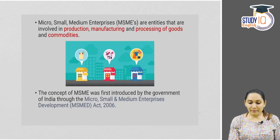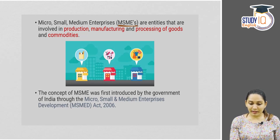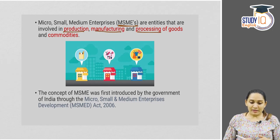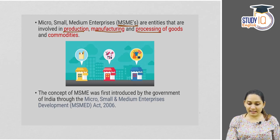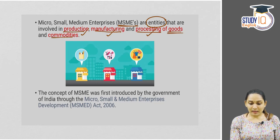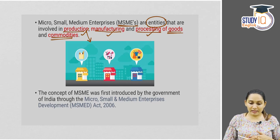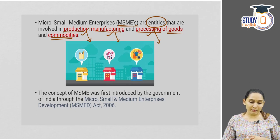MSME — that is micro, small and medium enterprises — are entities that are involved in production, manufacturing and processing of goods and commodities. These enterprises, even though they work at a smaller scale, can either produce goods and services, manufacture goods and services, or be involved in processing of goods and commodities.